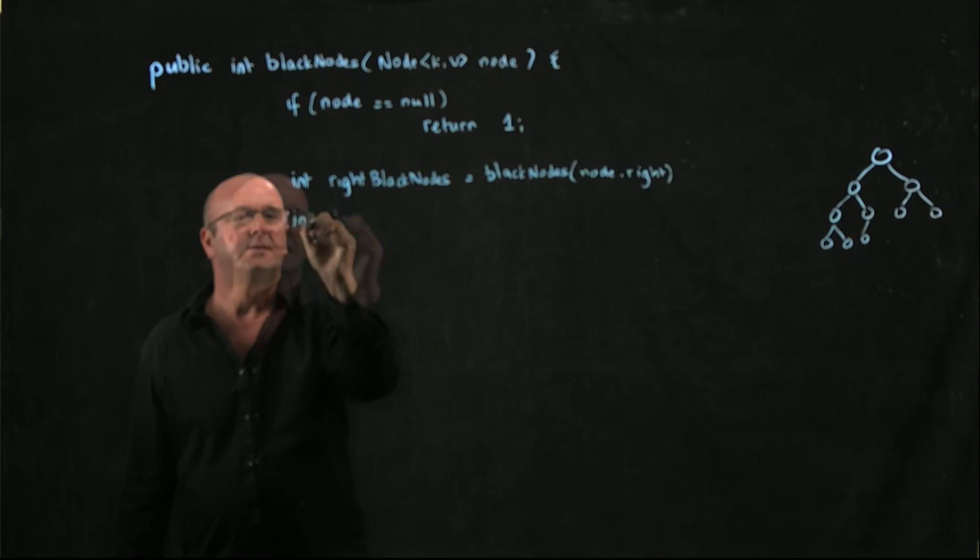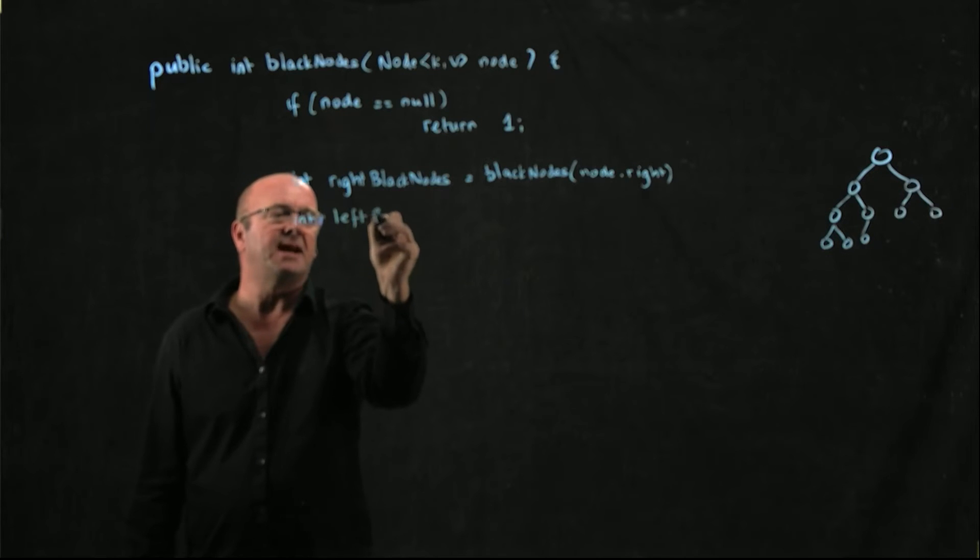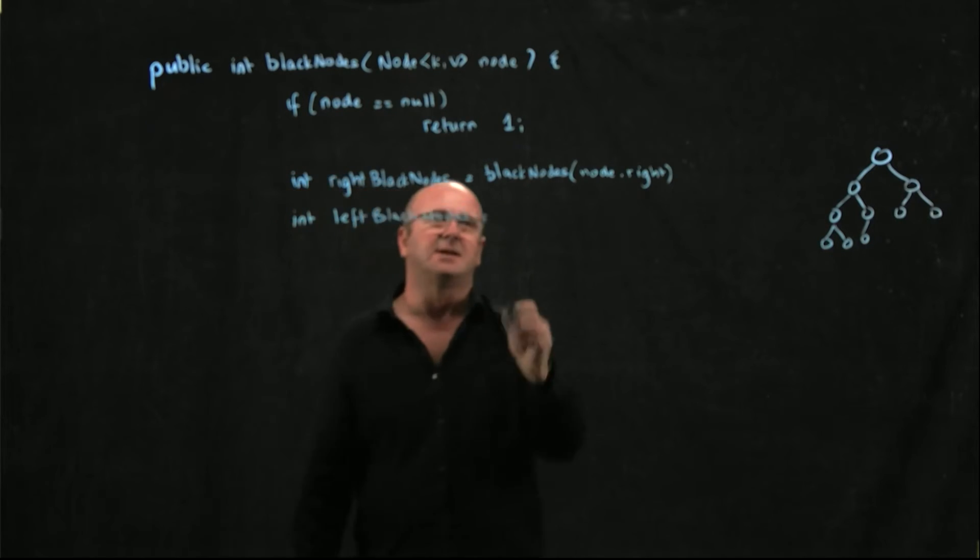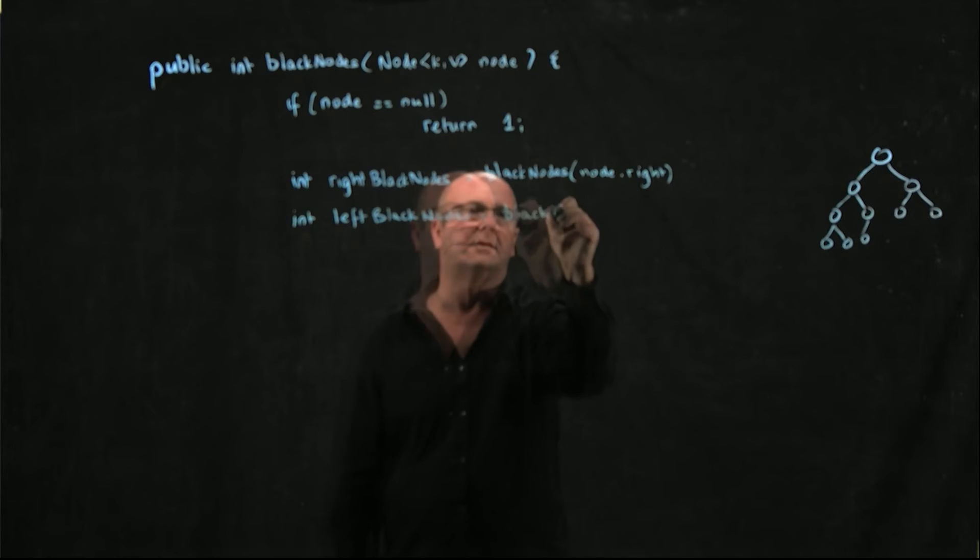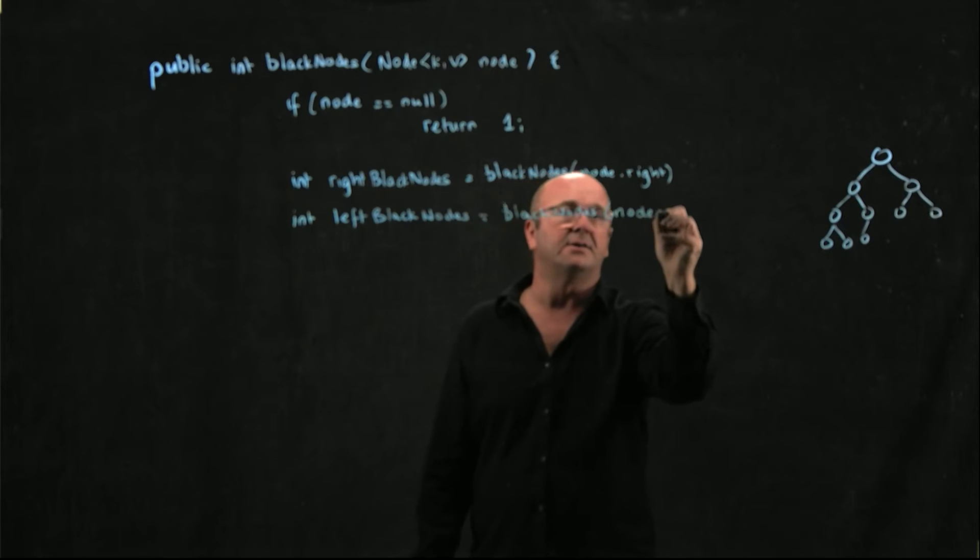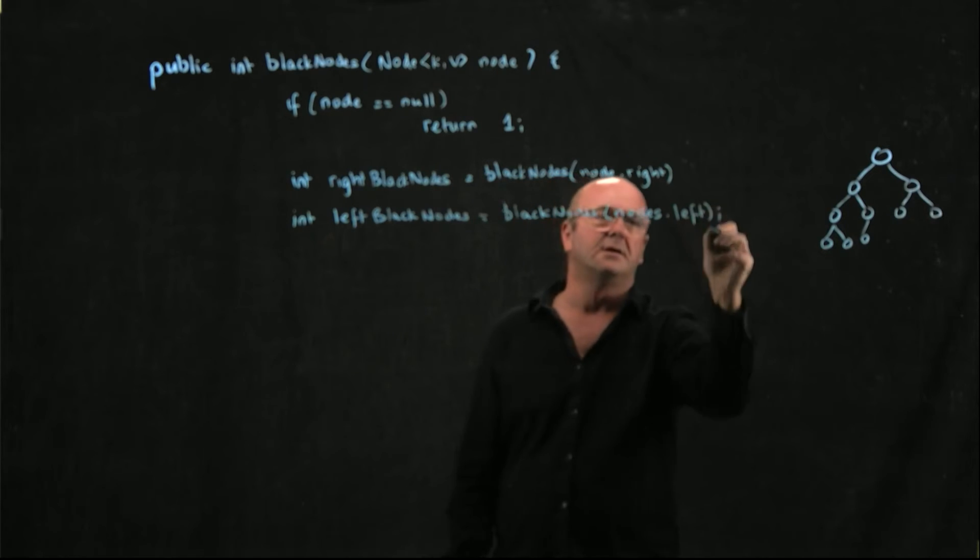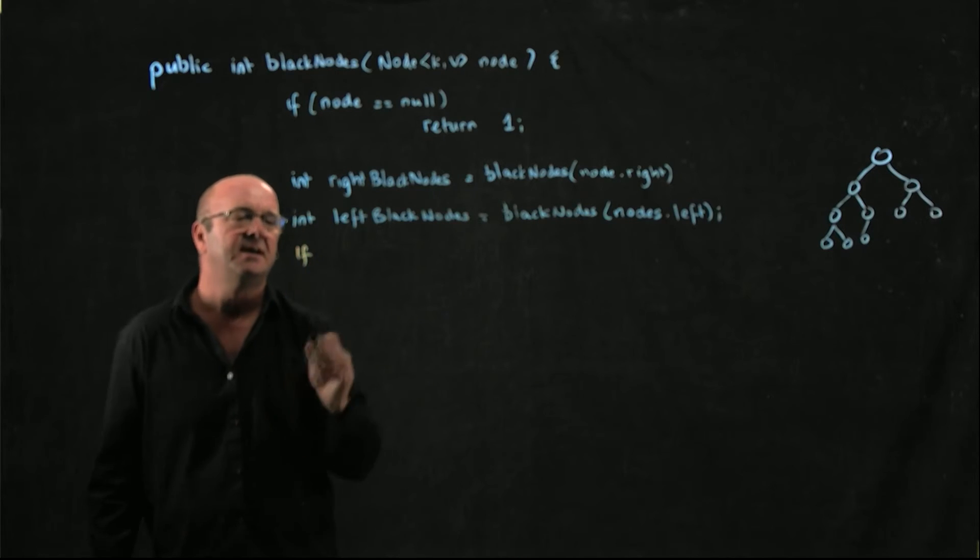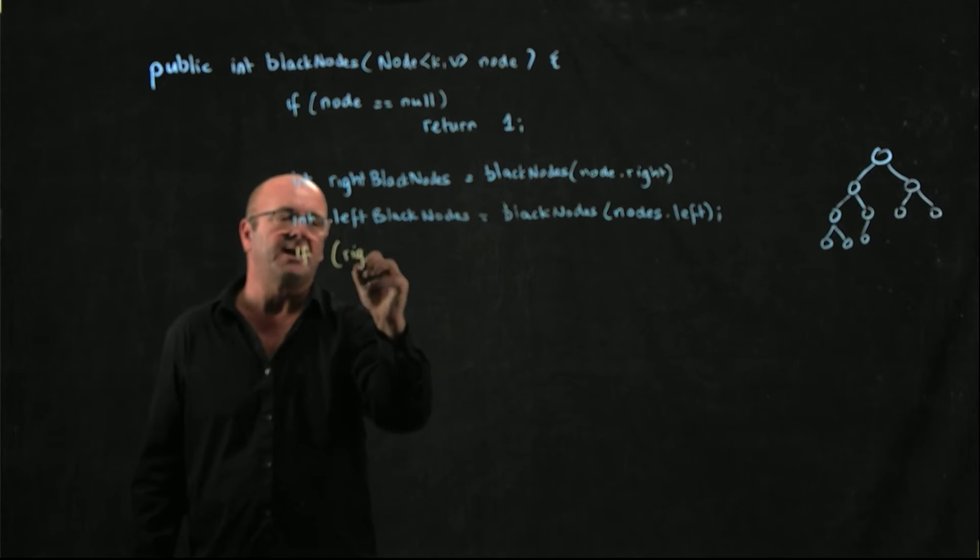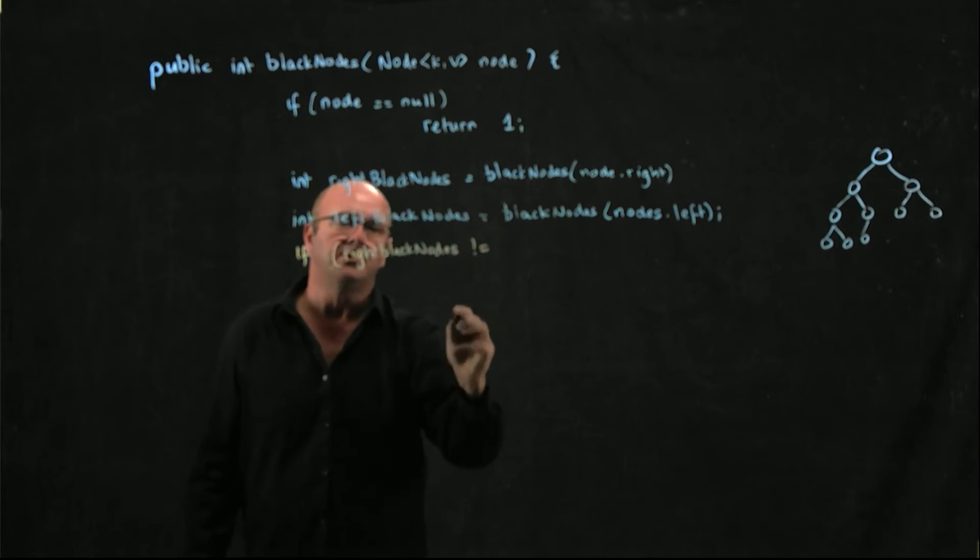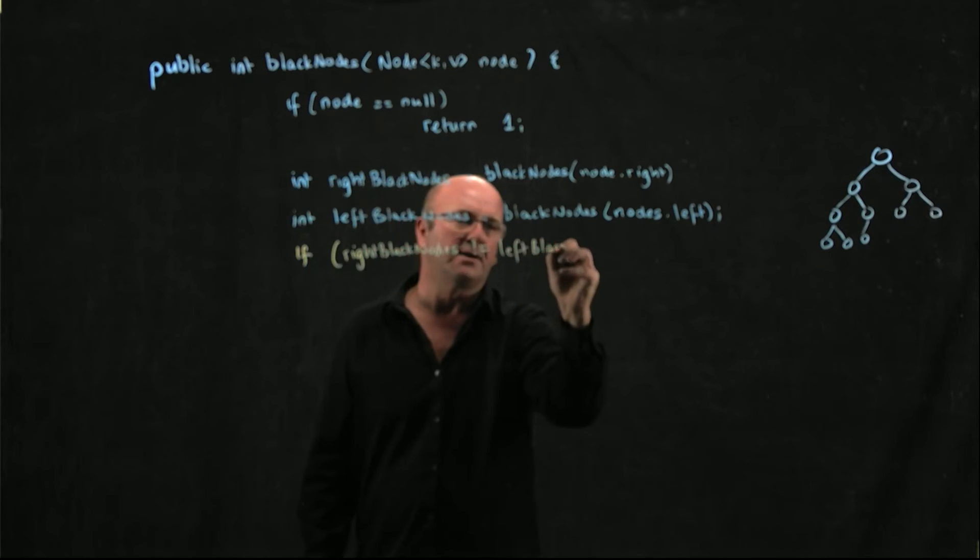And we can ask how many black nodes there are on the left hand side of the tree. So black nodes is nodes dot left. One of the things that we should do is say if right blacks does not equal left black nodes,